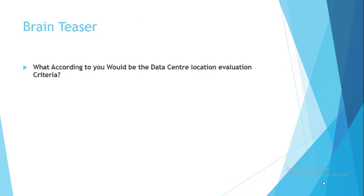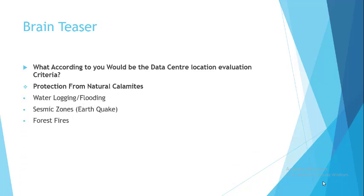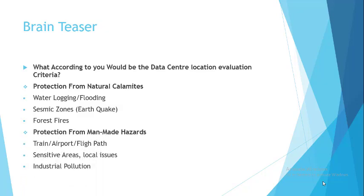Assume for a moment you are a CTO — chief technical officer — and you have the opportunity to select the location of your data center. You will generally check two things: whether the site is protected from natural calamities like water logging, flooding, or earthquake, and whether it is a seismic zone. You will also check protection from manmade hazards — whether the area is sensitive, if there are any local issues, if an airport is nearby, or if there is a lot of industrial pollution.